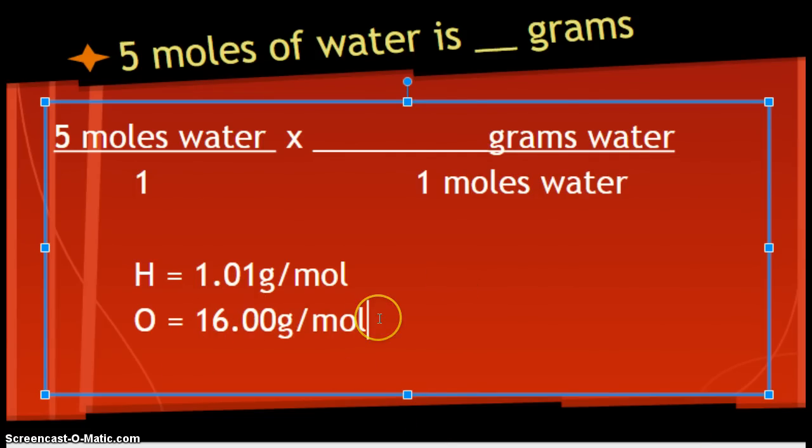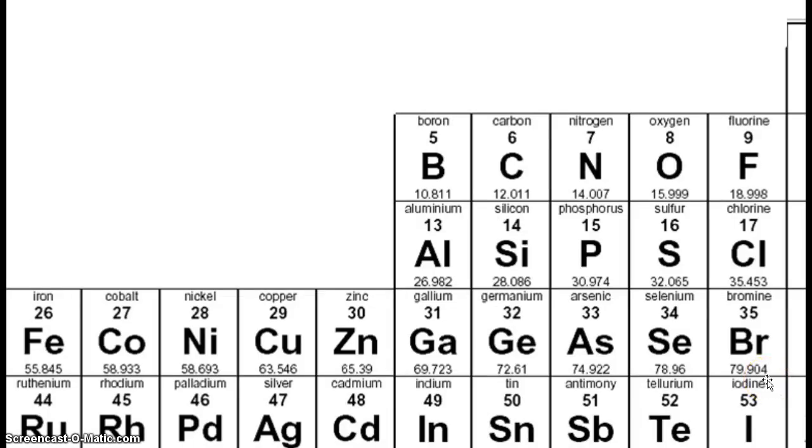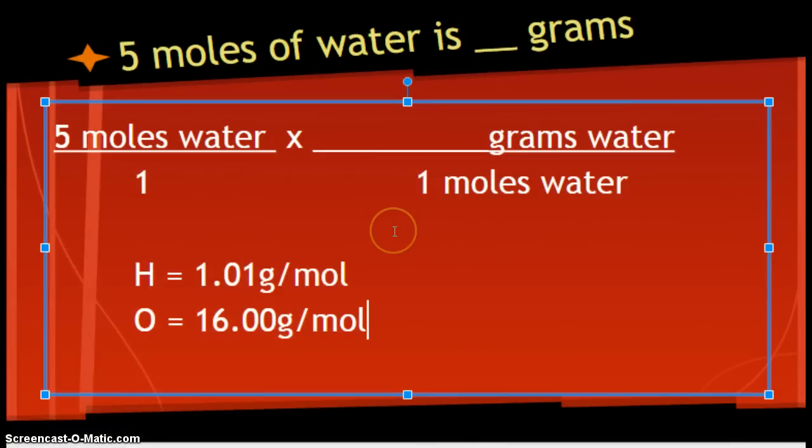If you do not know how I'm getting these numbers, I'm looking at the periodic table. So, you should have one in front of you all the time when you do chemistry. For oxygen, I'm just taking the atomic mass and I'm rounding it to hundredths.